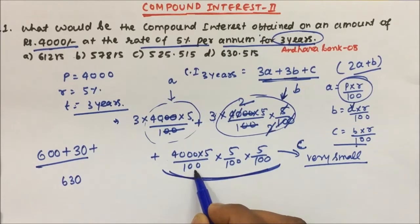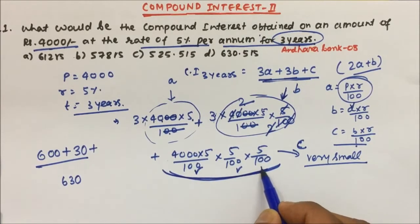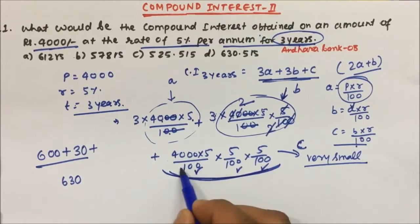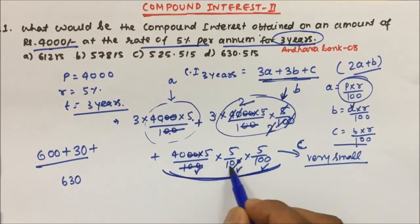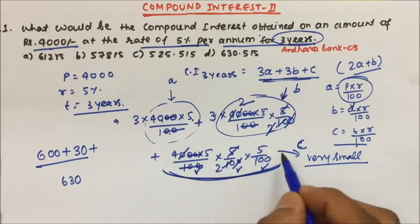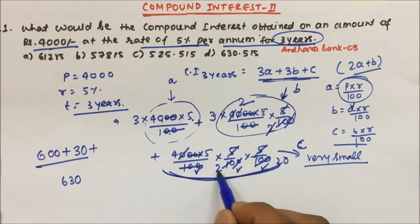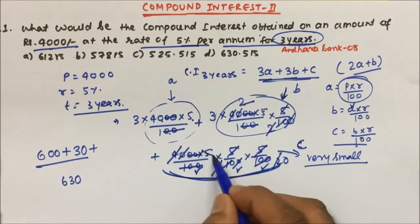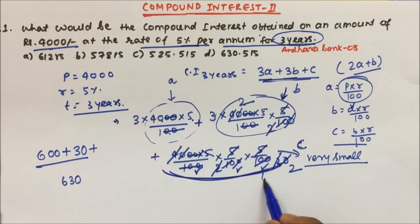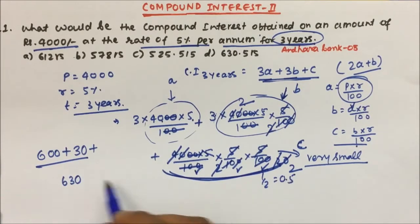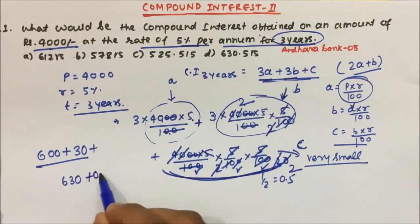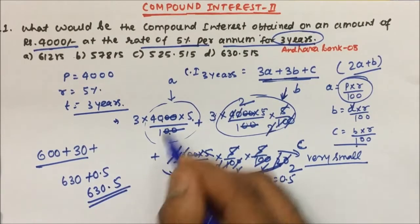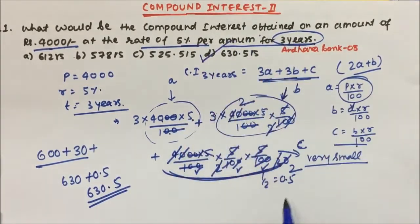The value of c will be very small because it is divided by 100, 100, and 100. Simplifying c: cancelling zeros gives 5 into 2 equals 1 by 2, which is 0.5. So 630 plus 0.5 is equal to 630.5, and option d will be our answer.